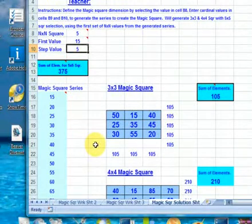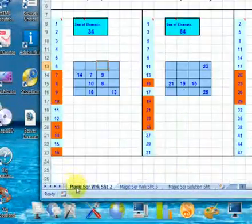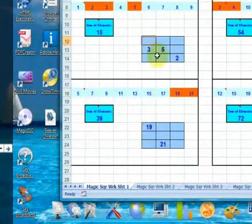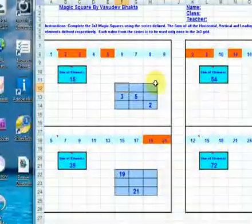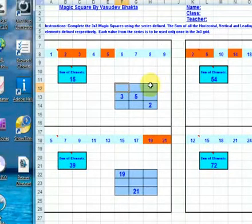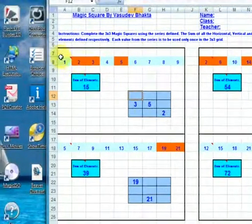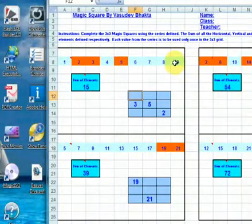So let's start with MagicSquareWorksheet1. The first grid has a set of numbers 1 to 9 here, which need to be arranged in the 3x3 grid here and must only be used once. The numbers placed in the grid are highlighted in red: 2, 3, 5 here.